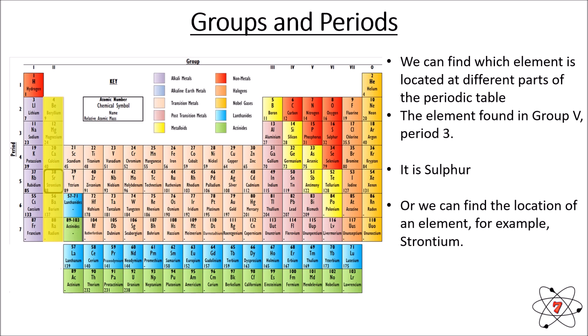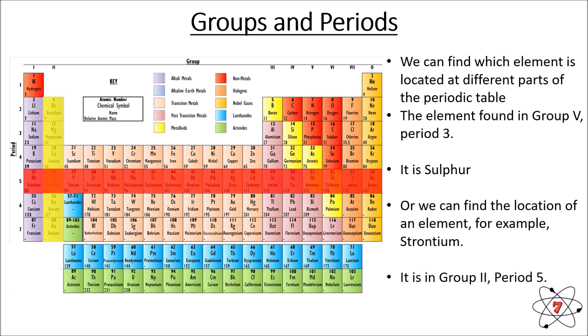Going down we can see strontium is in group two, and going across we can see it is in period five. It's really important that you can locate elements based on their period and group, and that if you know the name of an element you can find its group and period. Just remember: groups are vertical, periods are horizontal.